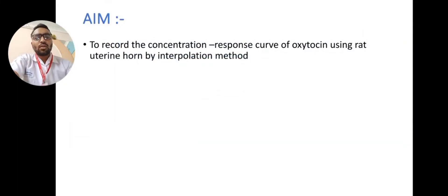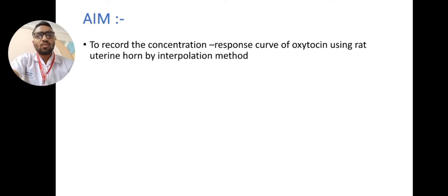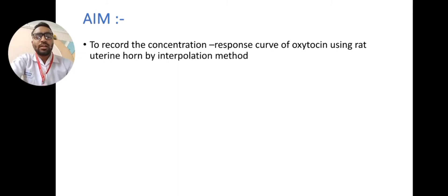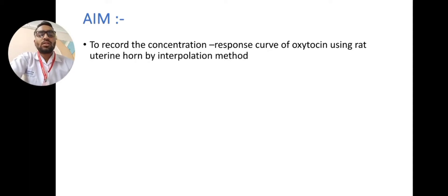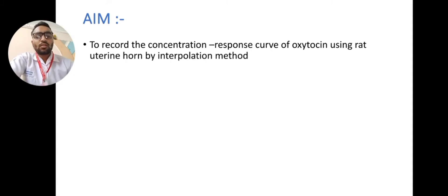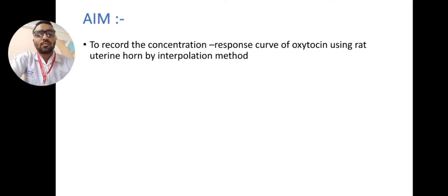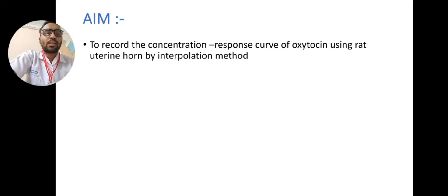The aim of our topic is to record the concentration-response curve of oxytocin using rat uterine horn by interpolation method. Oxytocin is a natural hormone that stimulates uterine contractions in childbirth and lactation after childbirth. The interpolation method is the simplest form of graded response assay, involves no statistical data and many calculations. The dose-response curve is first obtained from different doses of the standard solution, and the concentration of unknown is then read from the standard graph. In a graded response assay, response is proportional to dose and may lie between no response and maximum response.